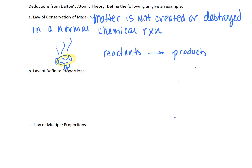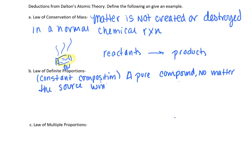Let's look at the next one, the law of definite proportions. Sometimes people call this the law of constant composition as well. In this one, a pure compound, no matter the source, will always have a definite or constant proportion of elements by mass.